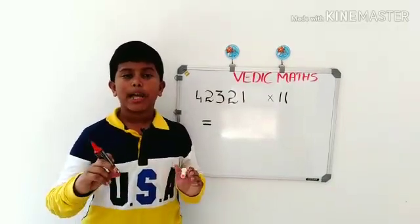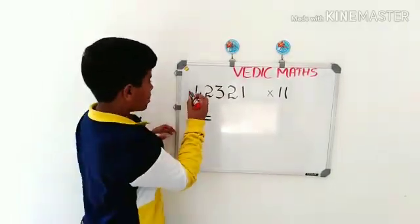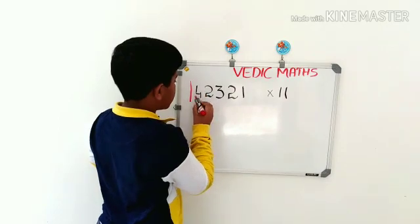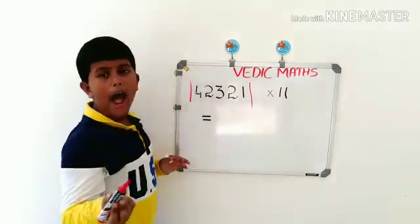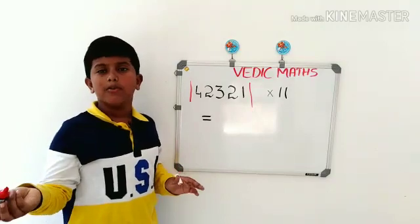First, we should draw two lines at both sides like this and put two zeros at both sides.